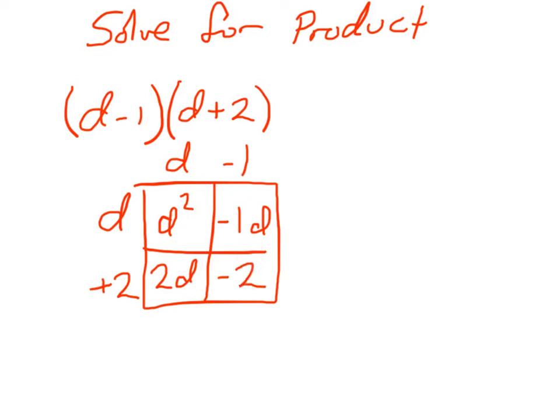I then take all four parts, part 1, part 2, part 3 and part 4, and I write them out in a single string where I get D squared minus 1D plus 2D minus 2. I can now take my inner part and simplify it.